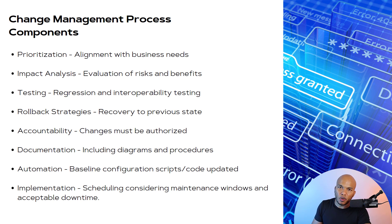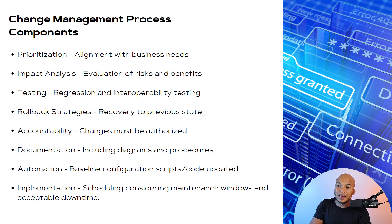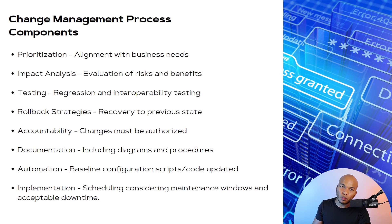We have several components involved in the change management process. The first is prioritization and alignment with business needs — is this change we want to implement aligned with the needs of our business? Then there's impact analysis: if we make this change, what will be the risks and what will be the benefits? And then testing — regression and interoperability testing will be very important.